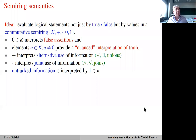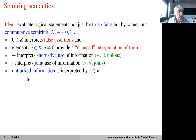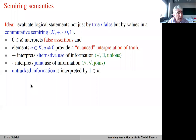So what is semi-ring semantics? It's based on the idea to evaluate logical statements not just by true and false, but by values in a commutative semi-ring. The zero element of the semi-ring interprets false assertions, and all other elements provide some shade of truth. Addition interprets the alternative use of information as it appears in disjunction and existential quantifiers, whereas multiplication interprets the joint use of information as in conjunctions and universal quantifiers.